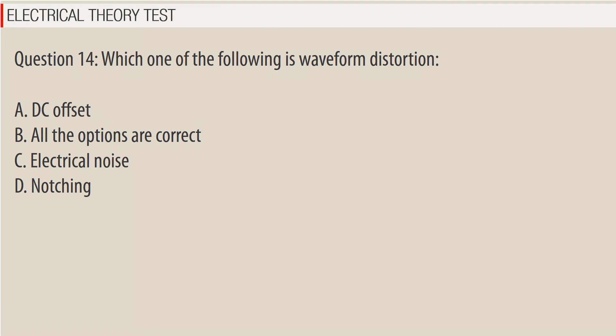Question 14: Which one of the following is waveform distortion? A. DC offset. B. All the options are correct. C. Electrical noise. D. Notching.